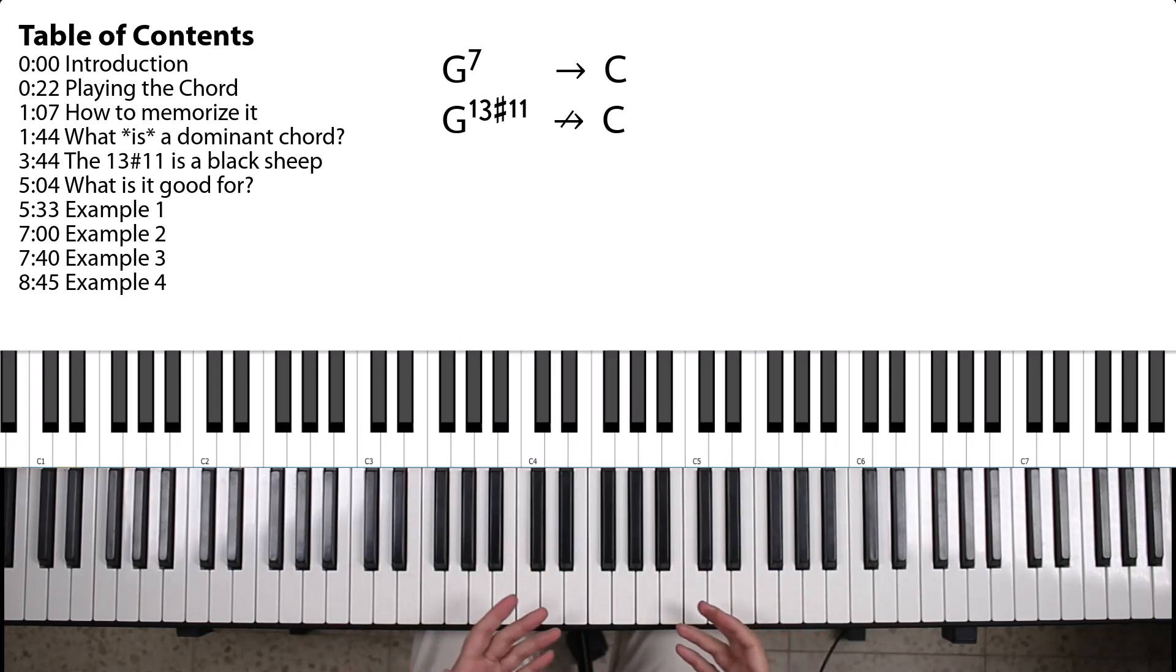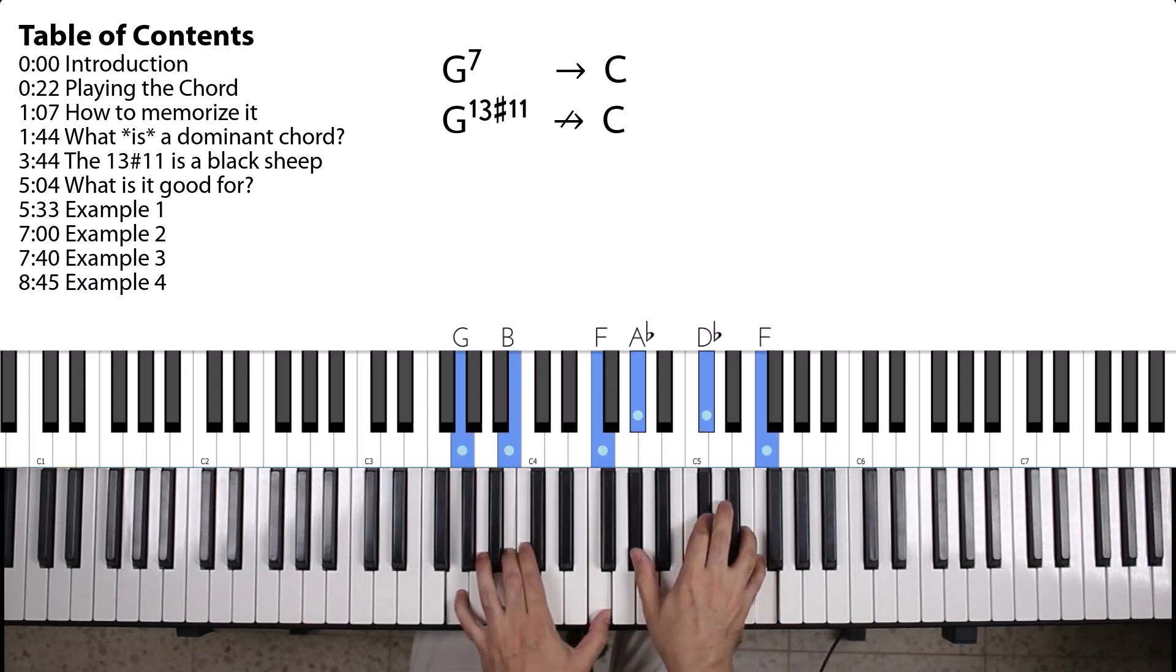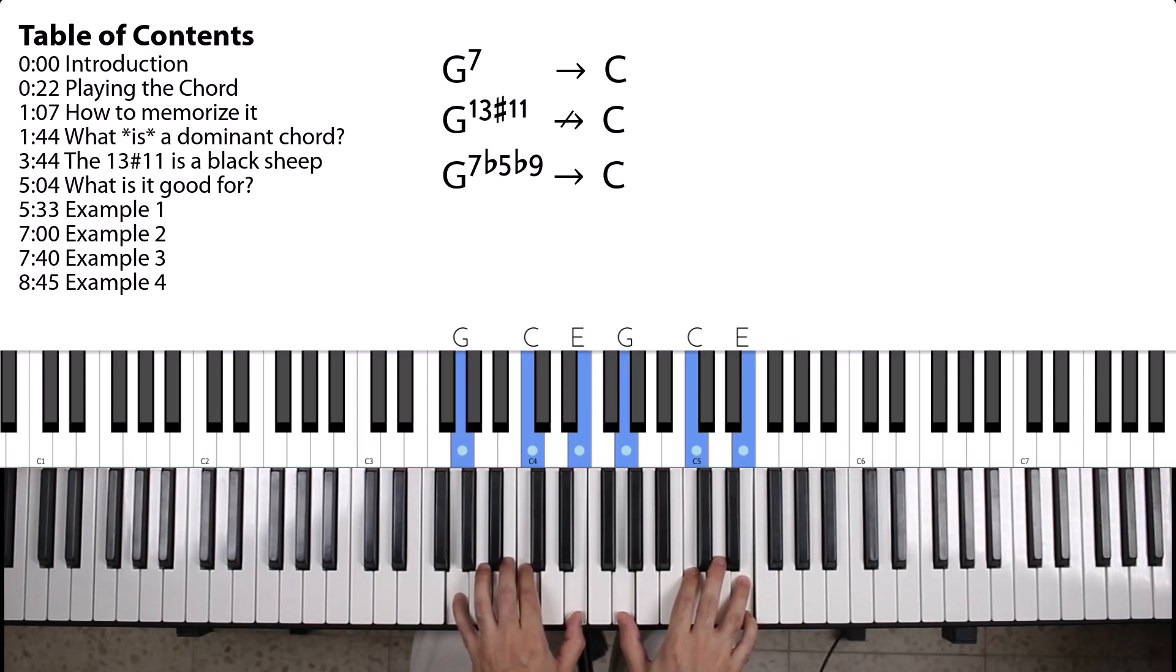This isn't because of the tensions. There are many variations on the G dominant 7th chord that resolve just fine to the C major. For example, this is a G dominant 7th chord with a flat 5 and a flat 9. And it resolves quite nicely to C major.